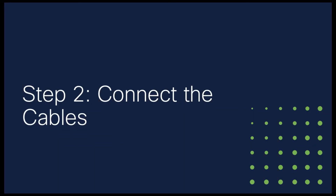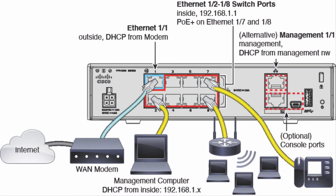Now we're going to connect the network cable and power to the device. This is a networking illustration for the Firepower 1010. First, you're going to plug in the device. Next, you're going to connect a network cable from Ethernet port 1-1, shown here in blue, to your wide area network modem. Your WAN modem is your route to the internet and will give your Firepower firewall a route to the internet as well. This illustration also shows a variety of devices being plugged into the firewall — you don't need to do that to complete this task.